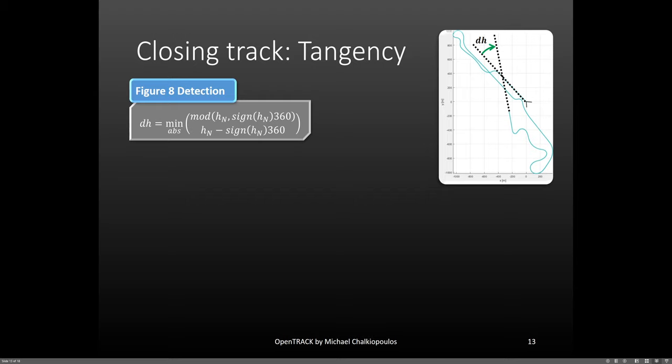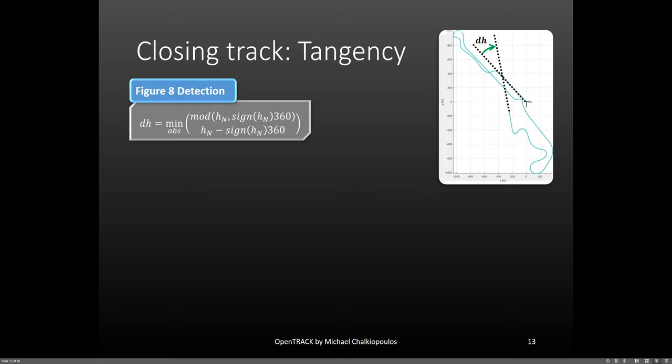And the second value, which is the value of the heading angle at the end minus its sign times 360. And the reason I use the sign of the heading angle here is to automatically take into account counterclockwise and clockwise circuits. Then, with the value of the error known, we linearly modify the heading angle.